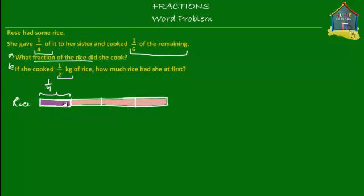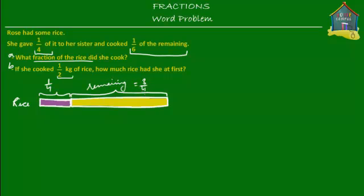The purple unit over here is what she gave to the sister and that's equal to a quarter of the rice. If that's one quarter, then how much is left? Well, there are three parts left — one, two, and three. These three parts together represent three out of the four parts, which is the fraction of the rice that's left. So this remaining quantity of rice is equal to three quarters of the rice. The sister got one fourth and what remained was three fourths or three quarters of the rice.